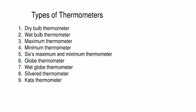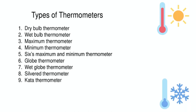The types of thermometers used in air temperature measurement are: dry bulb thermometer, wet bulb thermometer, maximum thermometer, minimum thermometer, globe thermometer, wet globe thermometer, silver thermometer, and kata thermometer. In this list, dry bulb and wet bulb thermometers are more important, whereas kata and globe thermometers are also important in correction of effective temperature.